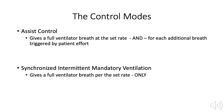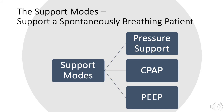To select a control mode, providers must choose between assist control or synchronized intermittent mandatory ventilation (SIMV). In assist control, the ventilator gives a full ventilator breath at the set rate and for each additional breath triggered by the patient's effort. In SIMV, the ventilator gives a full ventilator breath per the set rate only. SIMV is often paired with pressure support ventilation, which can support any additional breaths above the set rate.